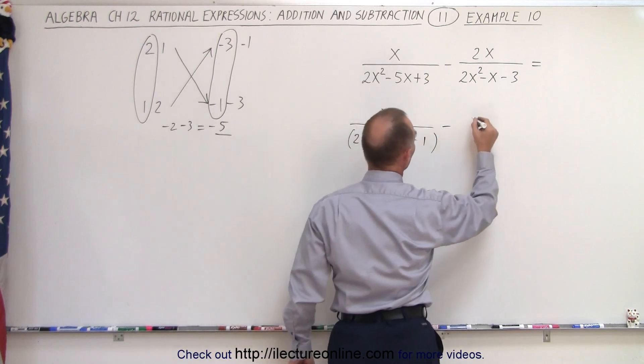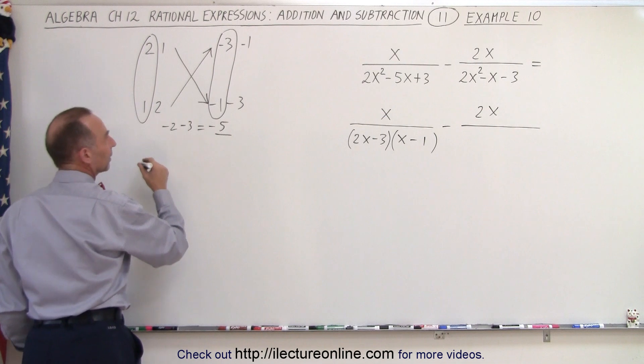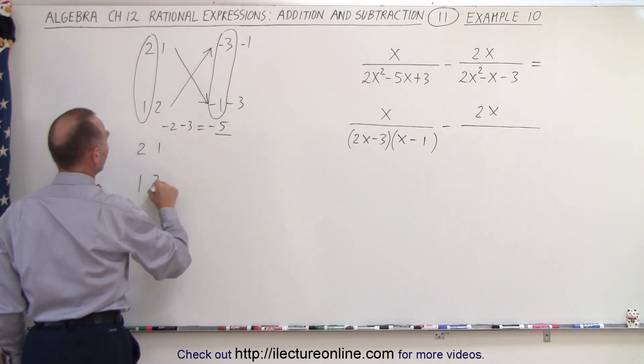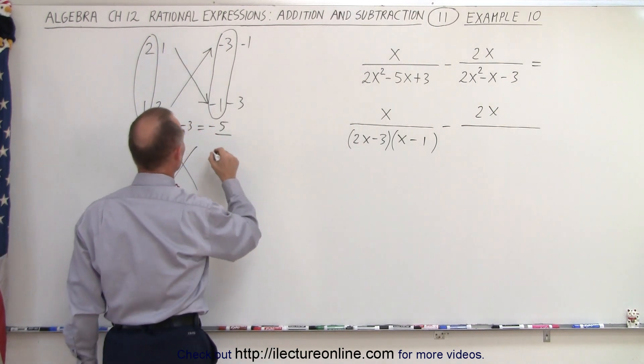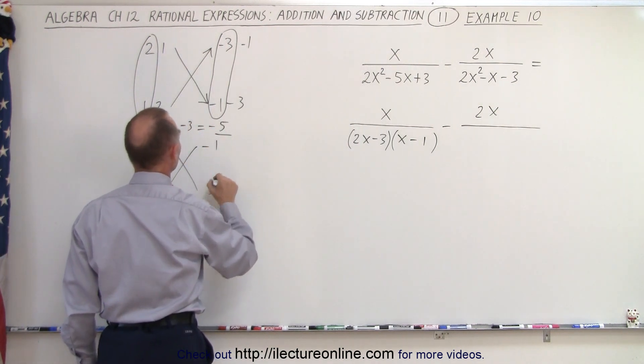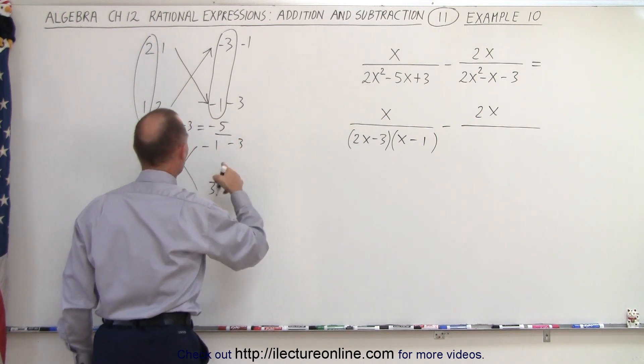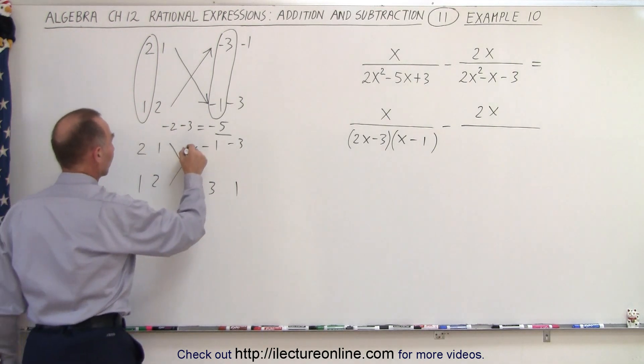We subtract the second one from that, so we have 2x in the numerator divided by, again we can use the FOIL method there. So we have a 2 and a 1 or a 1 and a 2. And in the back, notice we have a negative 3, that means we need minus 1 and 3, or we can have minus 3 and 1. We don't have to have all the combinations here because we already have all the combinations in the front.